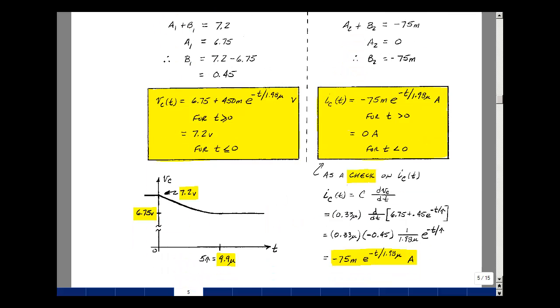Let's sketch the voltage result. For t less than zero, I just have 7.2 volts, and then for t greater than zero, I have this equation, but if you wait long enough, this term will drop out. You just have 6.75.